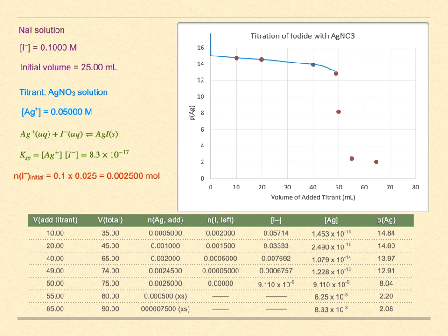Now we can calculate more points, and the whole titration curve looks like this. So much of what we discovered with acids and bases applies equally here: finding the equivalence point using calculus, using the equivalence point to find the concentration of an unknown. There are some special indicators that could be used under certain special conditions.